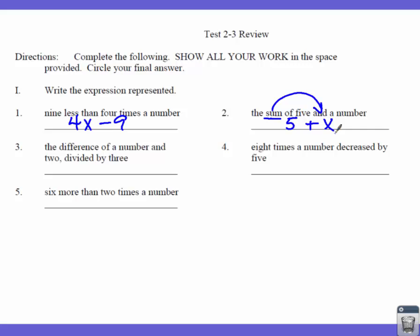Number 3: the difference of a number and 2. Difference means I'm going to subtract, and it's one of those words where I get an answer before moving on. The difference of a number and 2 — so X minus 2 — and the comma means we have parentheses or a big bar. So we find the difference first, then divided by 3. This first part is either in parentheses or under a big fraction bar divided by 3.